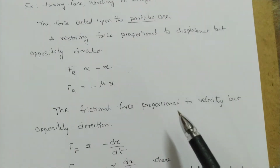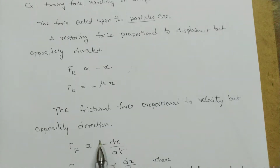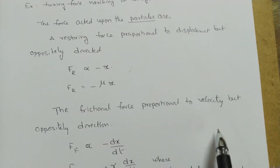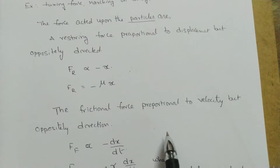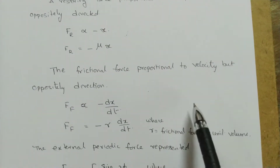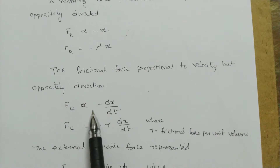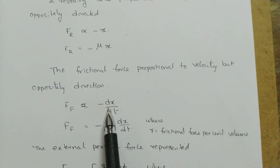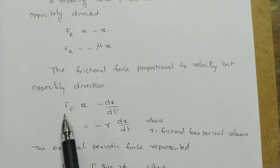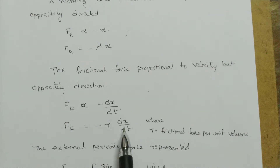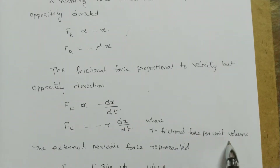The frictional force is proportional to velocity but in the opposite direction. If a body is moving from left to right, the frictional force acts from right to left, and vice versa — always opposing the direction of motion. So the frictional force is directly proportional to -dx/dt. Thus Ff = -r(dx/dt), where r is the proportionality constant, or frictional force per unit velocity.